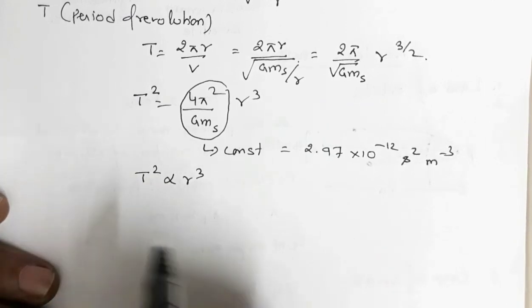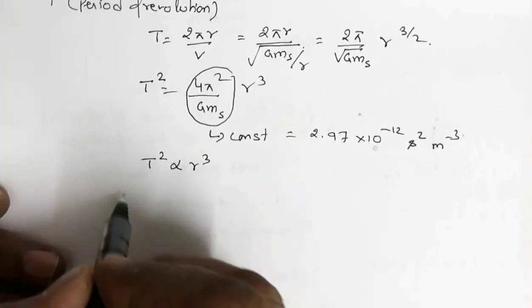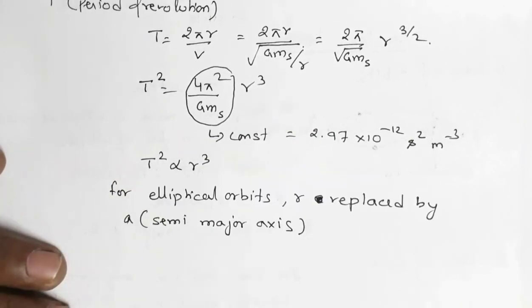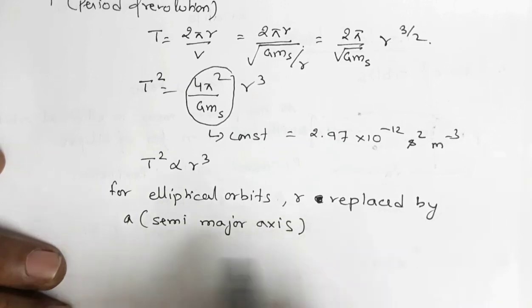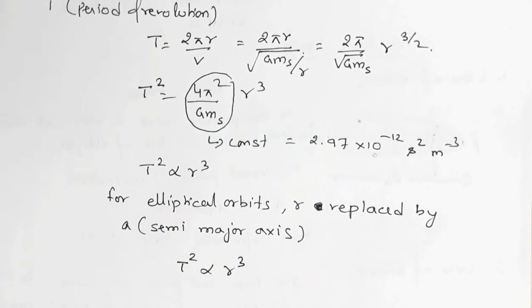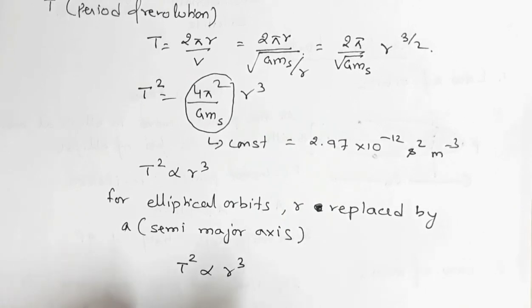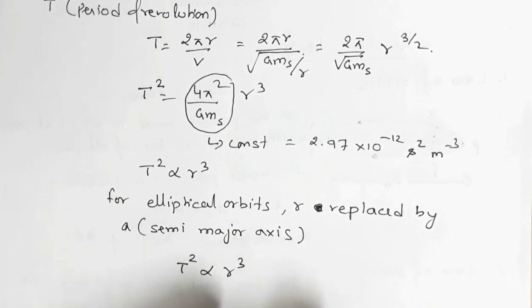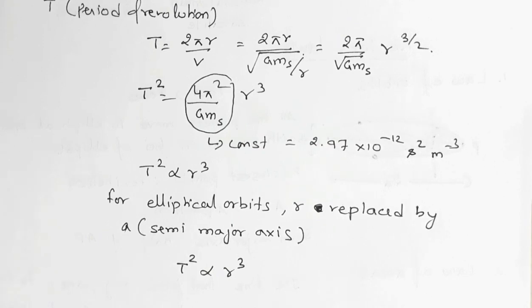For elliptical orbits, R is replaced by A, the semi-major axis. So we have T² proportional to A³. These are the three Kepler's laws. I hope this was clear to you. You can go through these things once again if you like, and also go through your NCERT textbook. I have prepared these things based on your NCERT textbook, and I hope after you read the textbook and watch this video, it will be much more helpful. Good luck.